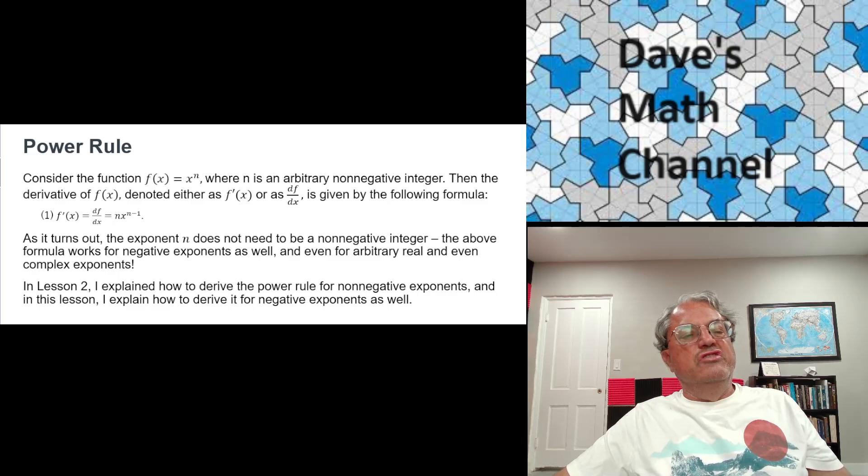Then the derivative is nx^(n-1). Actually, n doesn't even have to be an integer. It can be an arbitrary real number or even an arbitrary imaginary number. We'll do arbitrary real numbers in a few lessons. We're not going to talk about imaginary exponents in this series—that's more for complex analysis—but it is true for complex exponents as well.